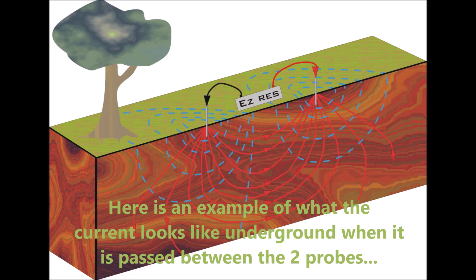Here is an example of what the current looks like underground when it is passed between the two probes.